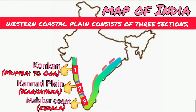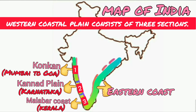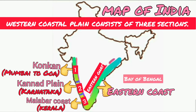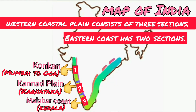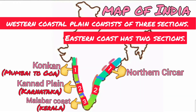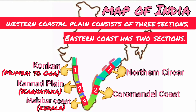Let us learn about the eastern coast in detail. It is sandwiched between the Eastern Ghats and the Bay of Bengal, and it has two sections. In the northern part, it is referred to as the Northern Sirkar, while the southern part is known as the Coromandel Coast.